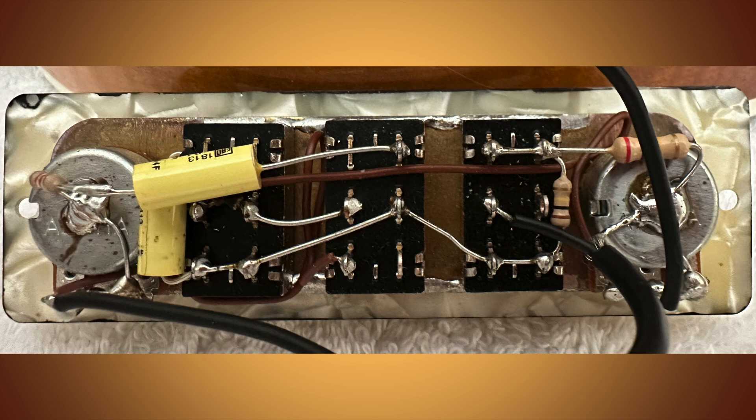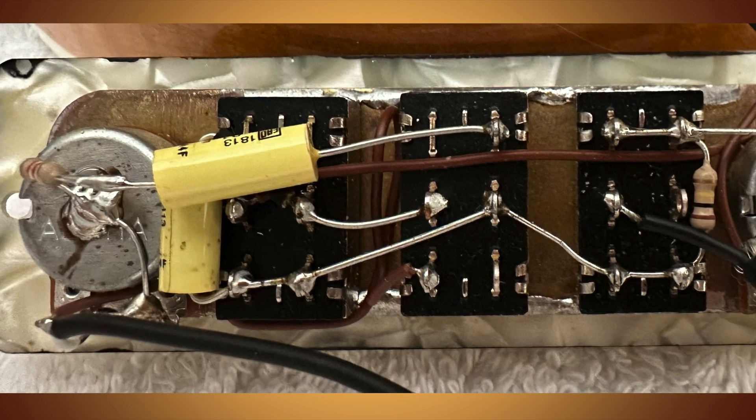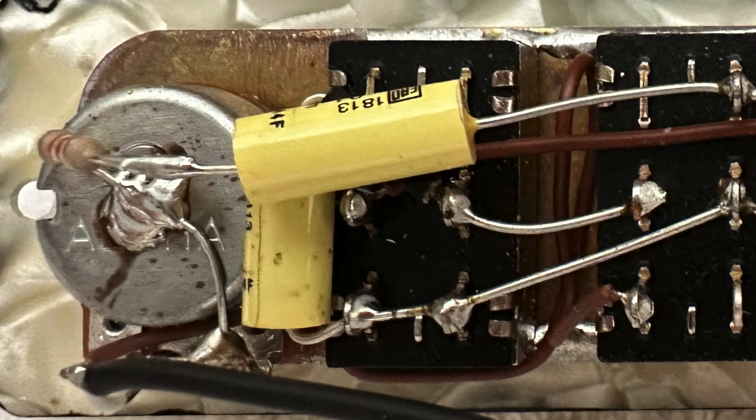Next, capacitors. At a high level, capacitors - the yellow cylinders here, but capacitors come in different shapes and colors - let the high treble frequencies from the signal source pass through and dampen the low bass frequencies.